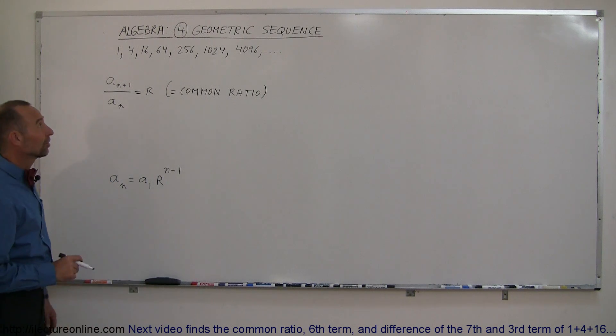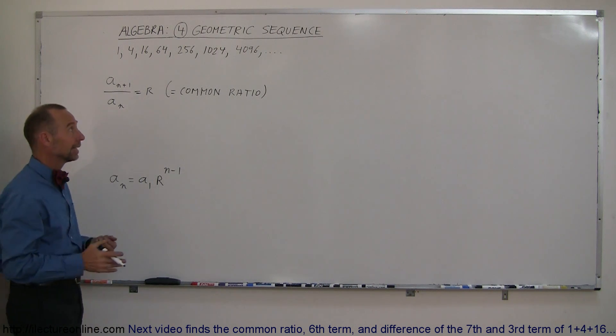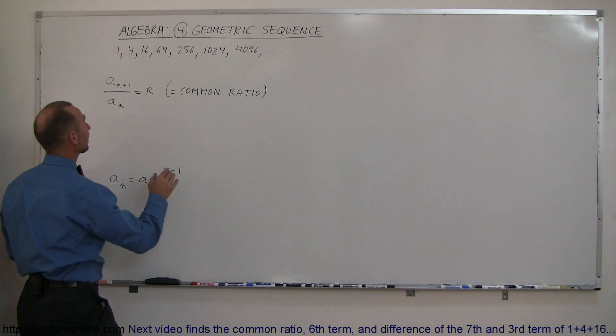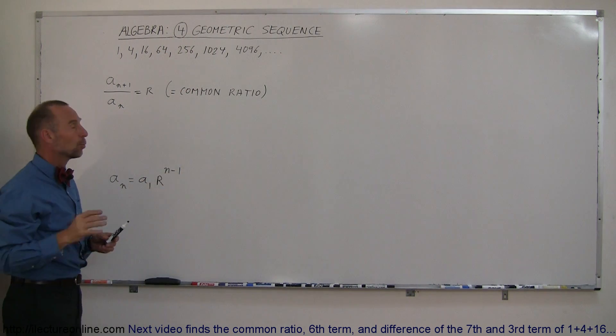And now on to the geometric series and sequence, starting out with the geometric sequence. Here's a set of numbers, and what's so special about them? We call it a geometric sequence if we can take any one of the numbers, divide it by the previous one, and always get the same ratio.